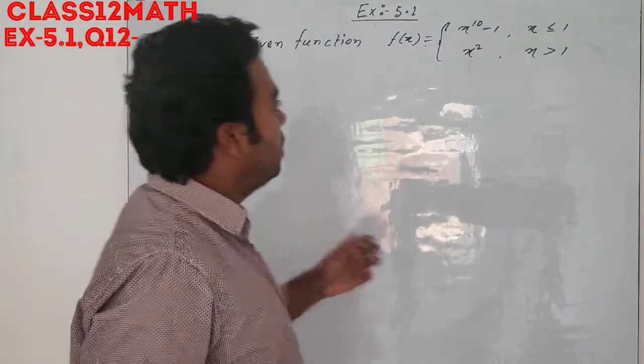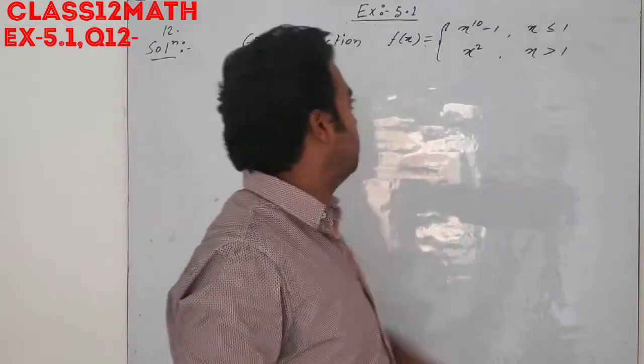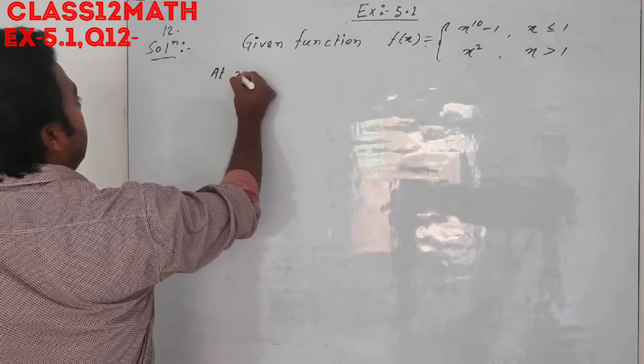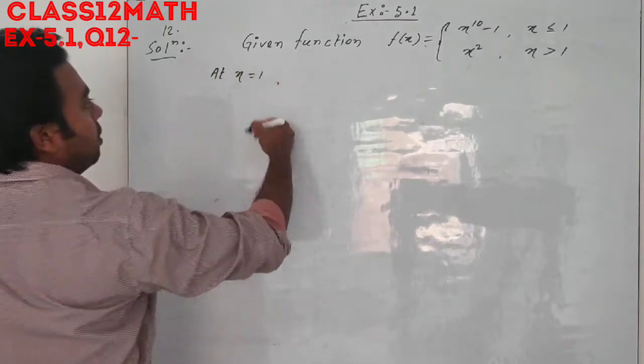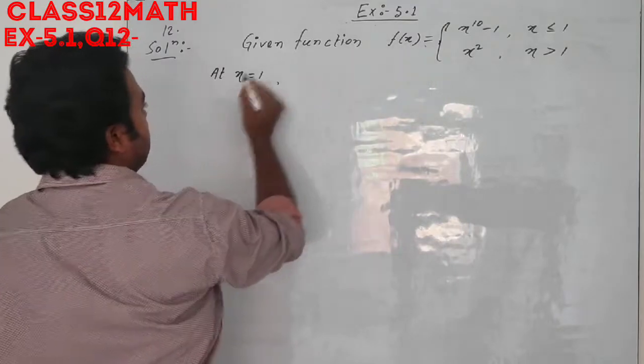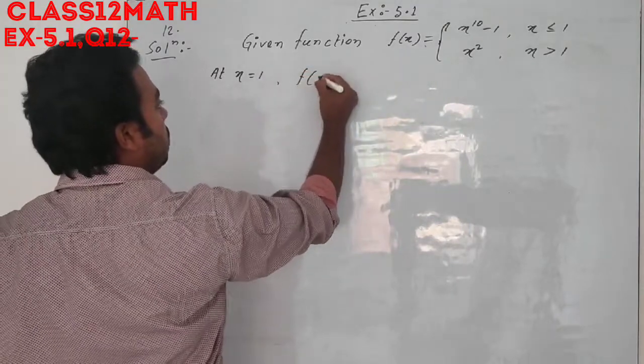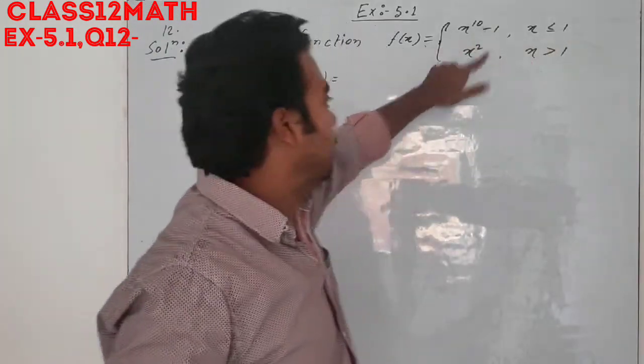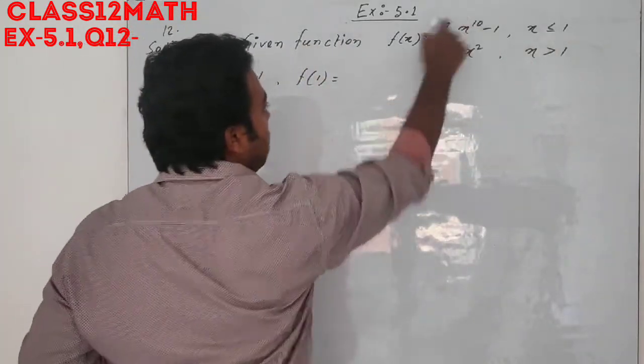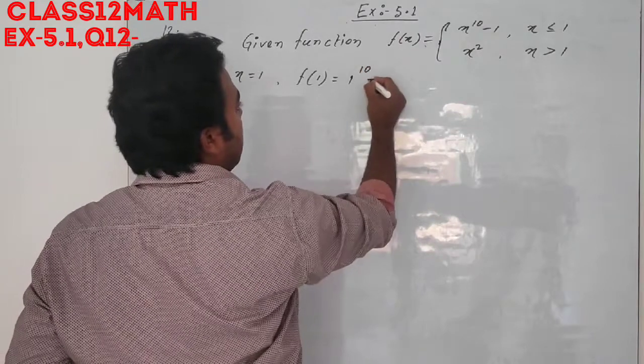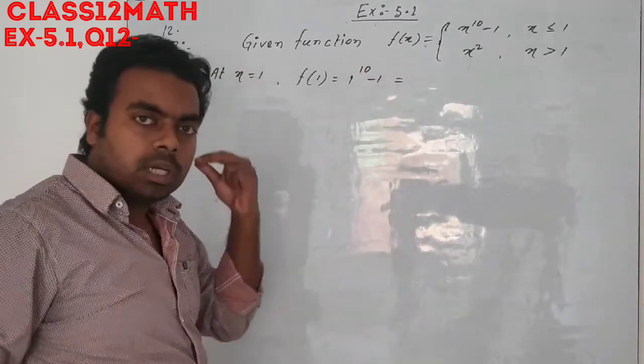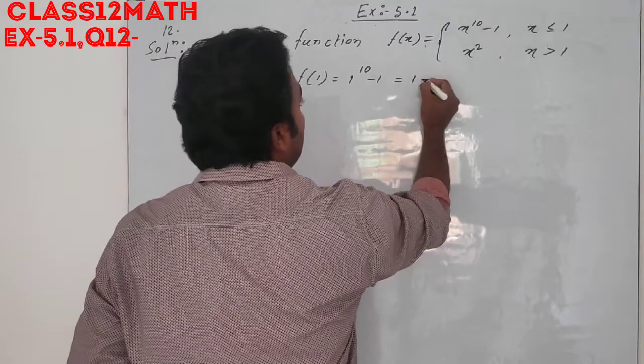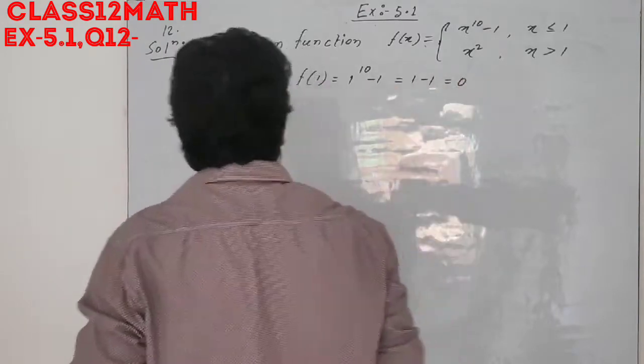So we will check continuity at 1. When x is equal to 1, f(x), the function equals 1 to the power 10 minus 1, which is 1 minus 0. So here we have 1 minus 1 equal to 0.